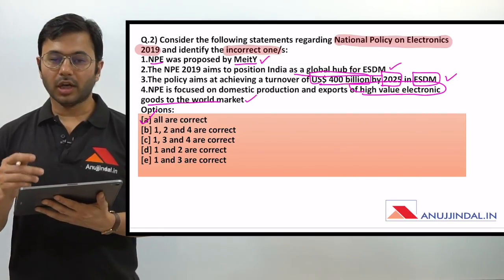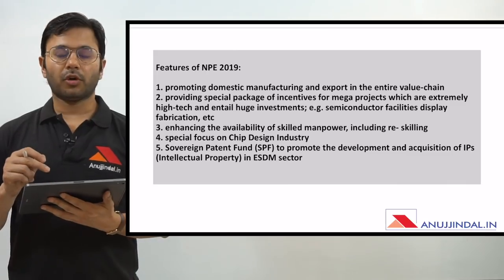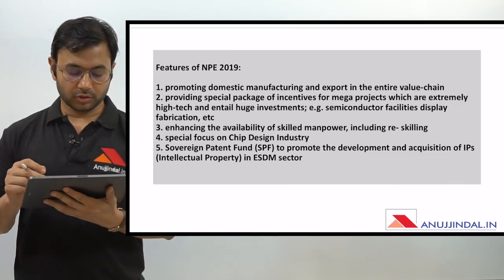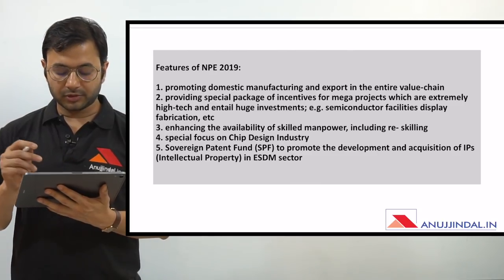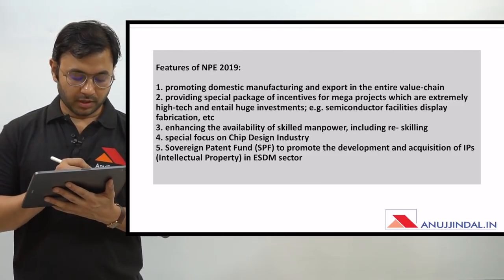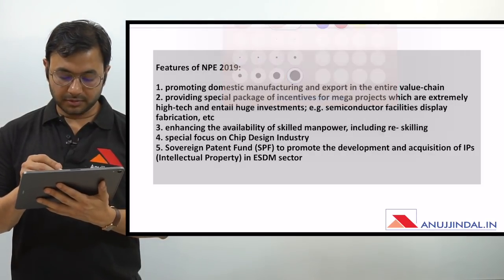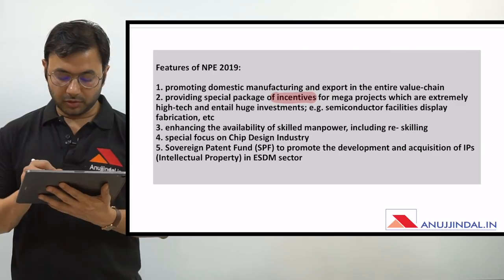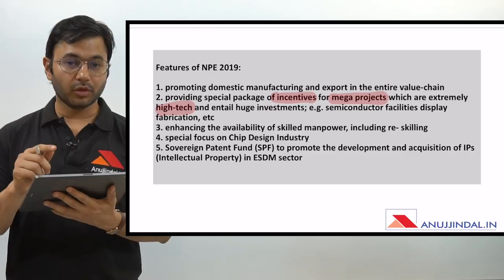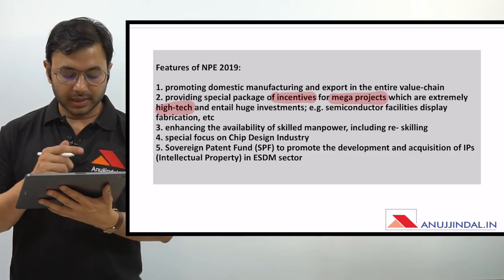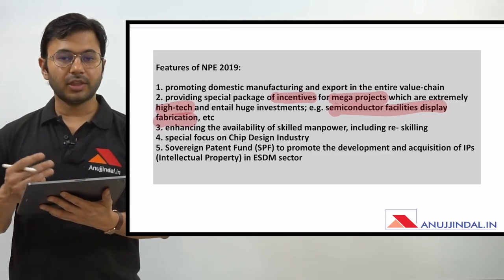So the correct answer is all are correct, or none of them is incorrect. Let us have a look at the important features of National Policy on Electronics 2019. First, it promotes domestic manufacturing and exports in the entire value chain. Second, providing a special package of incentives for mega projects which are extremely high-tech and therefore high value products, and entail huge investments like semiconductor facility, display fabrication, etc.